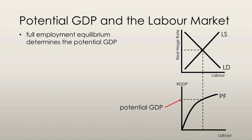Full employment equilibrium actually determines potential GDP because it determines the quantity of labor that is supplied and demanded — how many hours an entire economy works. When we look at the labor market, we find an equilibrium, and from that equilibrium we figure out how many labor hours the economy is working. We can take that same number and look at the production function, input that quantity of labor, and find the corresponding point on the production function. That's how we figure out what potential GDP is.